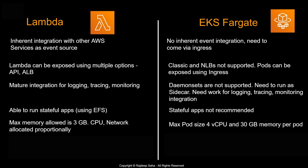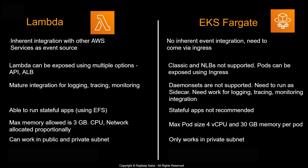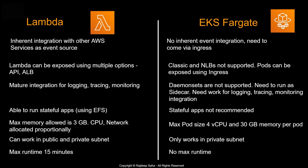For EKS Fargate, the maximum pod size can have 4 vCPU and 30GB of memory per pod. If you attach a VPC to your Lambda, it can work in both public and private subnets, whereas EKS Fargate currently works only in private subnets. Lambda has a maximum runtime of 15 minutes, while EKS Fargate has no maximum runtime limit.